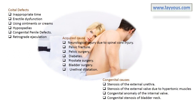Retrograde ejaculation — in these patients the semen flows to the bladder at the time of ejaculation instead of out through the external opening. This happens when there is a problem in the bladder neck due to congenital causes, stenosis of the external urethra, stenosis of the external valve due to hypertonic muscles, congenital anomaly of the internal valve, or congenital stenosis of bladder neck. Acquired causes include neurological injury due to spinal cord injury, pelvic fracture, pelvic surgery, diabetes, prostate surgery, bladder surgery, and urethral dilatation.